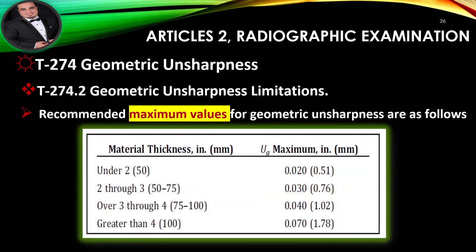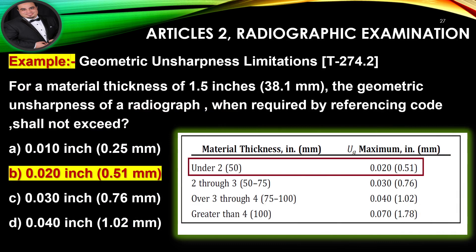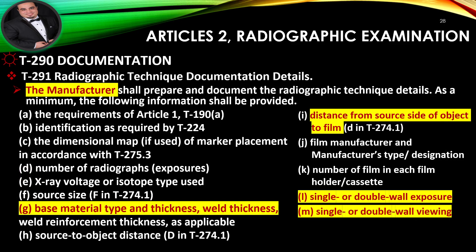Geometric Unsharpness Limitations: Recommended maximum values for geometric unsharpness are provided in Table T-274.2. Example: For a material thickness of 1.5 inches (38.1 mm), the geometric unsharpness of a radiograph, when required by the referencing code, shall not exceed — answer is B per Table T-274.2. The manufacturer shall prepare and document the radiographic technique details; as a minimum, all required information shall be provided. Note that geometric unsharpness is not required in the technique documentation.